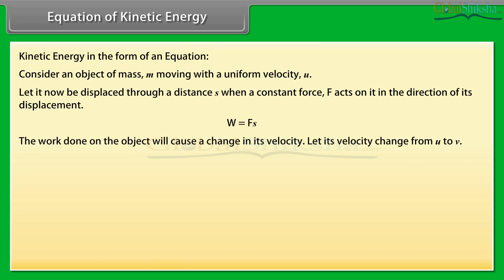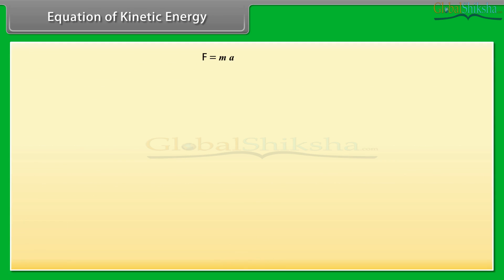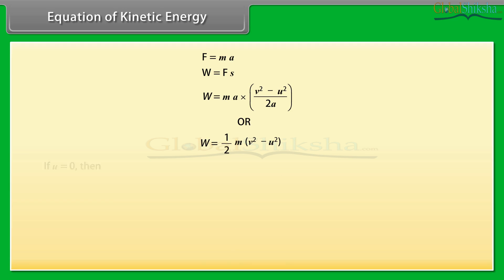The work done on the object will cause a change in its velocity. Let its velocity change from U to V, and let A be the acceleration produced. The relation connecting initial velocity U, final velocity V, acceleration A, and displacement S is: V² − U² = 2AS. This gives S = (V² − U²) / 2A. Since F = MA, using values of F and S in the work equation, we get W = MA × (V² − U²) / 2A, which simplifies to W = ½M(V² − U²). If the object starts from rest (U = 0), then W = ½MV².